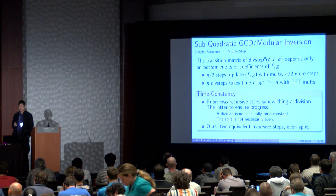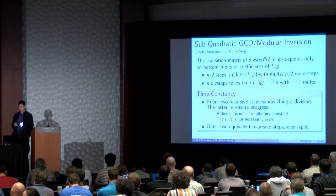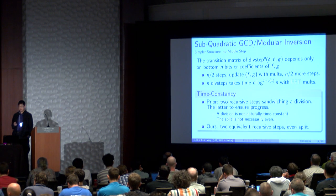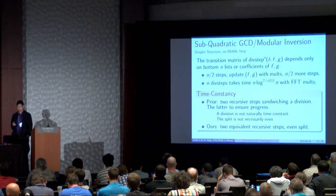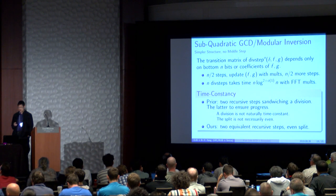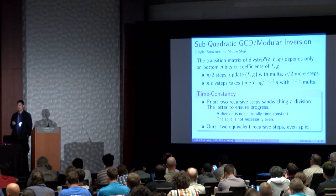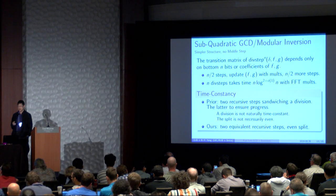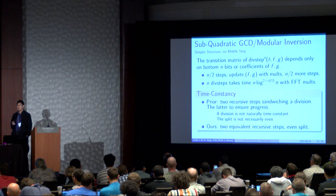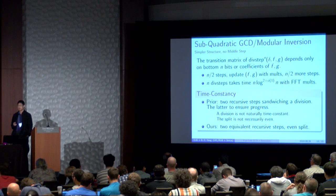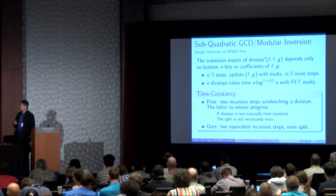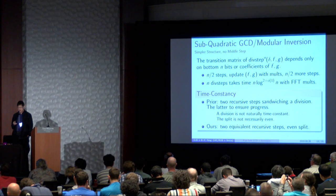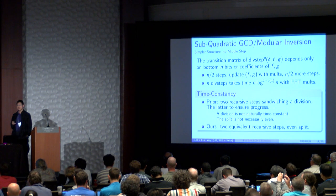And previously, two recursive steps sandwiching a division is what it looks like. The latter is necessary because you need this to ensure that there is progress. So the division is not naturally time constant. To make it time constant takes some non-trivial modification. And the split is not even and that makes it slower. Our algorithm has two equivalent recursive steps and it's an even split and there's no division step.